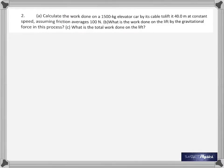The second problem: calculate the work done on a 1500-kilogram elevator car by its cable to lift it 40 meters at constant speed, assuming friction averages 100 newtons. There's also friction to consider. It's being lifted up so there's MGH, but on top of that you also have to think about work done against friction.